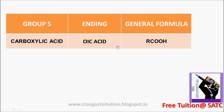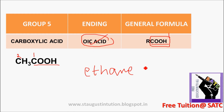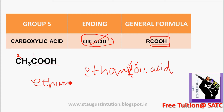Next: carboxylic acid. The functional group is COOH, and the suffix used is OIC ACID. The general formula includes COOH. For example, with two carbons: word root is ETH, single bond gives AN, and adding OIC ACID gives ETHANOIC ACID.